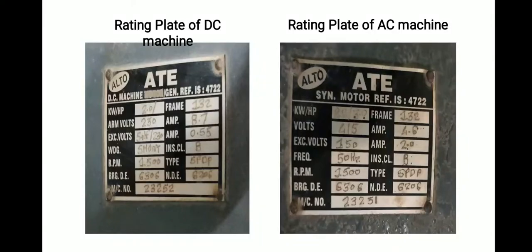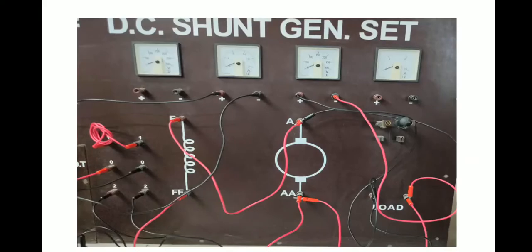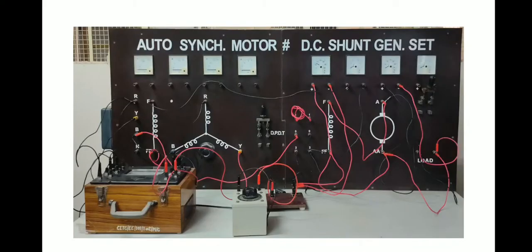If you see the excitation current of the AC machine is 2 amperes. I would require to keep this current in mind while exciting the AC machine. The connections of DC shunt machine is such that my field winding F FF is in parallel with the armature winding A double A and it is parallel to the load which is connected to it, and this is how I complete the entire connection of my panel.